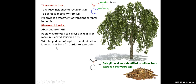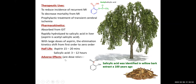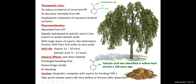With large doses of aspirin, the elimination kinetics shift from first-order to zero-order kinetics. There are three drugs that follow zero-order kinetics: high doses of aspirin, phenytoin, and ethanol. The half-life of aspirin is 15 to 20 minutes, and salicylic acid has a longer half-life of 3 to 12 hours. Adverse effects include prolonged bleeding time; GI bleeding is the most common side effect. All antiplatelet and anticoagulant drugs carry a risk of hemorrhagic stroke. Ibuprofen competes with aspirin for binding COX-1, so you should separate these two drugs by two hours.